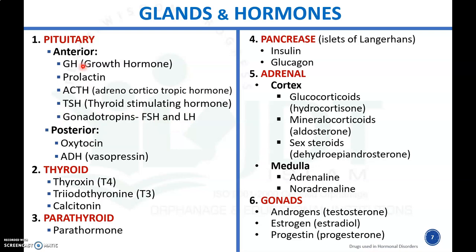The posterior pituitary releases oxytocin and vasopressin, which is also known as antidiuretic hormone. The thyroid gland releases thyroid hormones like thyroxine, triiodothyronine, and calcitonin. The parathyroid glands release parathormone, and the pancreas — specifically the islets of Langerhans — releases insulin as well as glucagon.